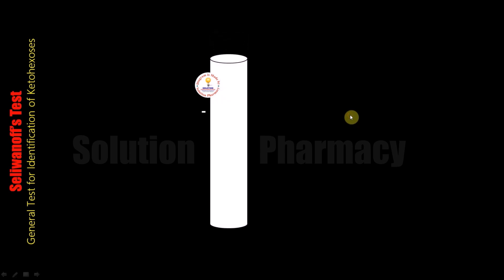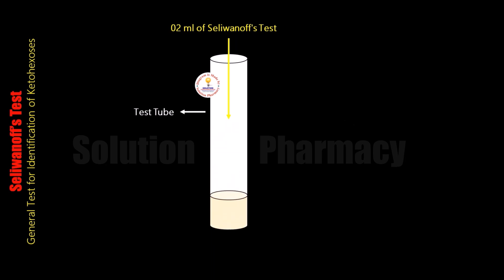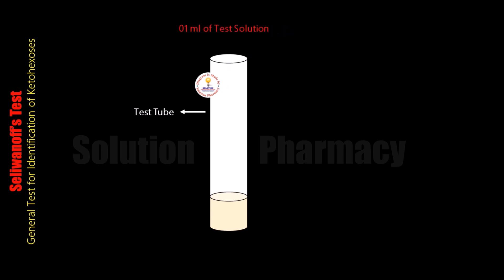First of all, take a test tube and then add 2 ml of Selivanov's reagent. A practical video on the preparation of Selivanov's reagent is already uploaded on our channel — the link is given in the description box. After adding 2 ml of Selivanov's reagent in the test tube, then add 2 ml of test solution in the same test tube. The test solution is the solution in which we have to detect the presence of keto sugar.